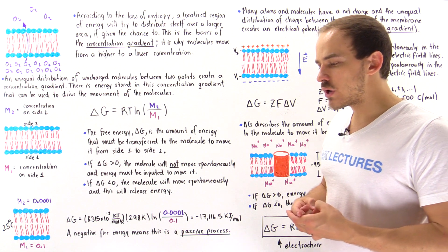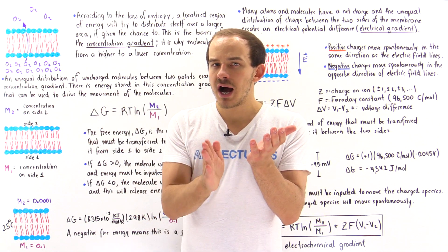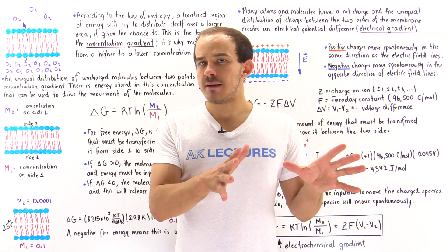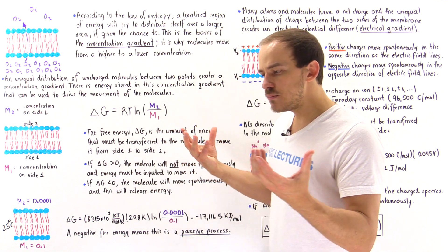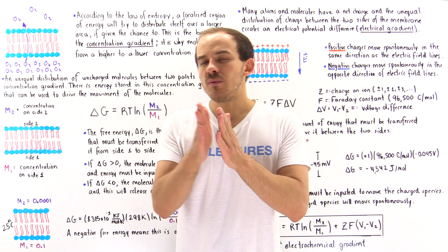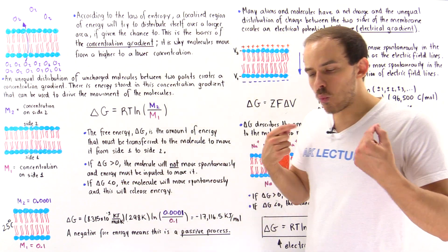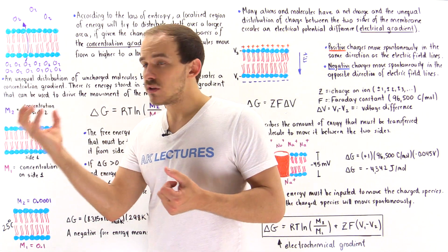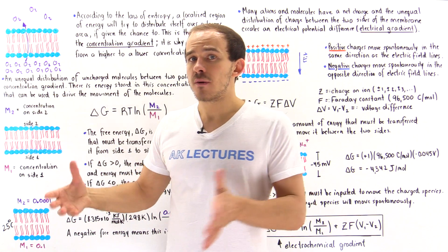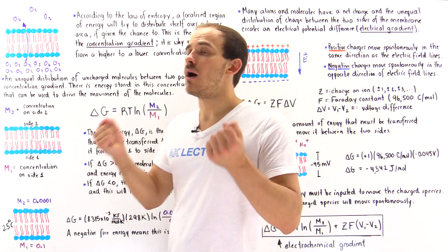Let's begin by discussing what the concentration gradient is. Suppose we have two boxes separated by a barrier that doesn't allow the movement of anything across. Box number two is left empty, but into box number one we place a localized bundle of energy. When we remove that barrier, according to the law of entropy, that bundle of energy will begin to move and distribute itself into box two, from a high amount to a low amount, until both boxes have the same and equal amount of energy.